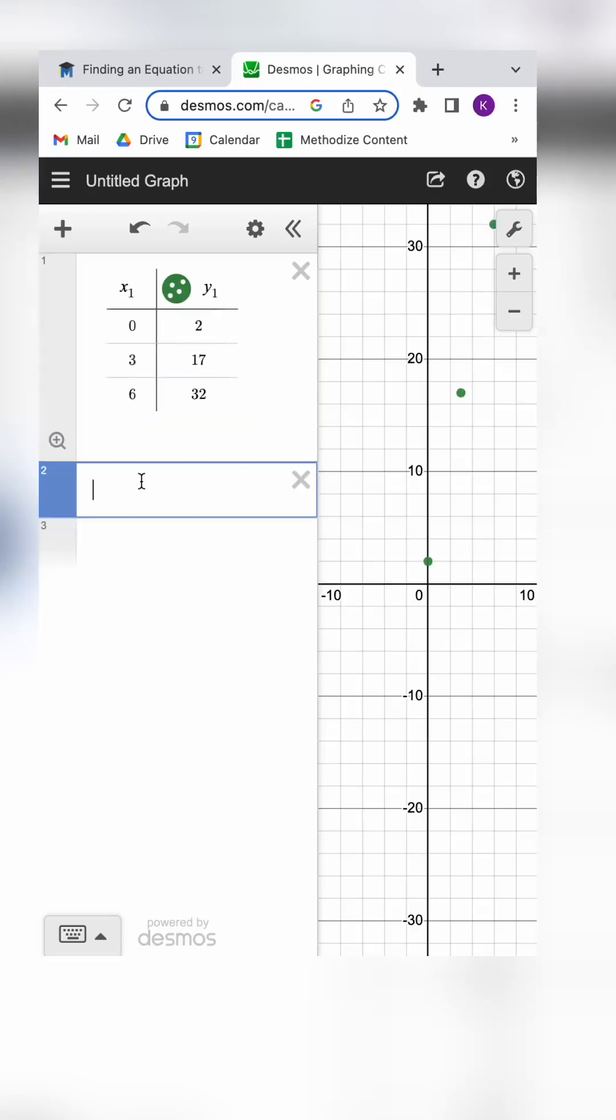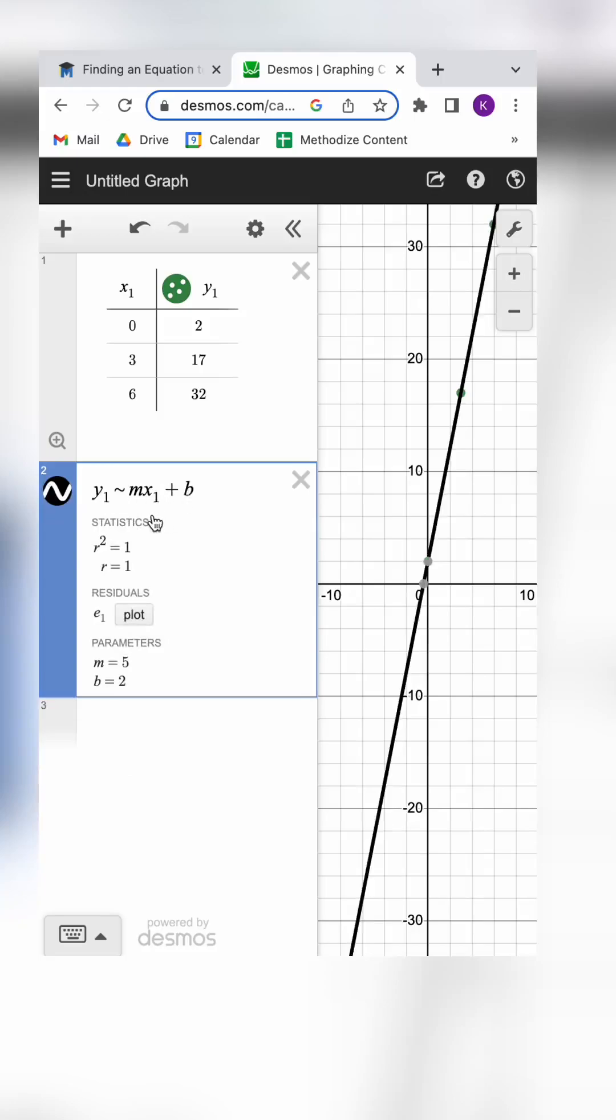Now I can write this equation in, or this expression, just like I'm doing here. Notice this looks like y equals mx plus b, except it's taking the x's and the y's in the table and it's having Desmos approximate the equation of the line.